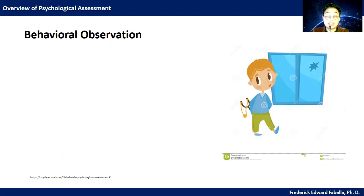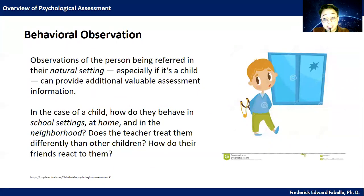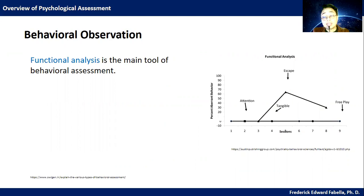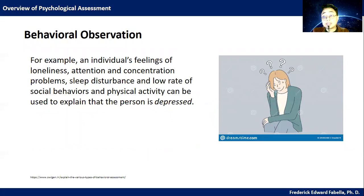Let's now go to behavioral observation, a different kind of psychological assessment. Observations of the person being referred in their natural setting — especially if it's a child — can provide additional valuable assessment information. In the case of a child: How do they behave in school settings, at home, in the neighborhood? Does the teacher treat them differently than other children? How do their friends react to them? Functional analysis is the main tool of behavioral assessment. The triple response mode of motor, cognitive, and physiological are used to define behavioral problems and diverse potential causes. Multi-causality is accepted — for example, an individual's feelings of loneliness, attention and concentration problems, sleep disturbance, and low rate of social behaviors and physical activity can be used to explain that the person is depressed.